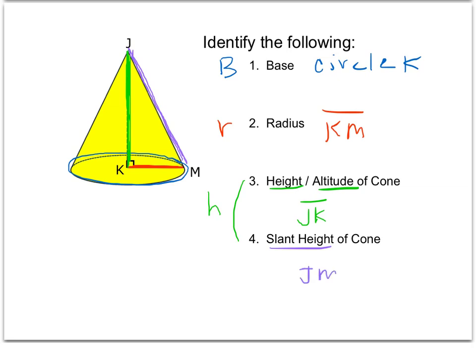The segment that represents the slant height in this case would be JM. Remember, the slant height is always that cursive lowercase l.